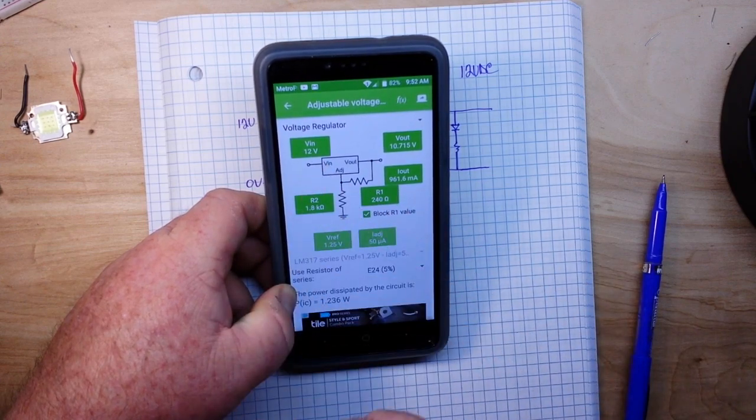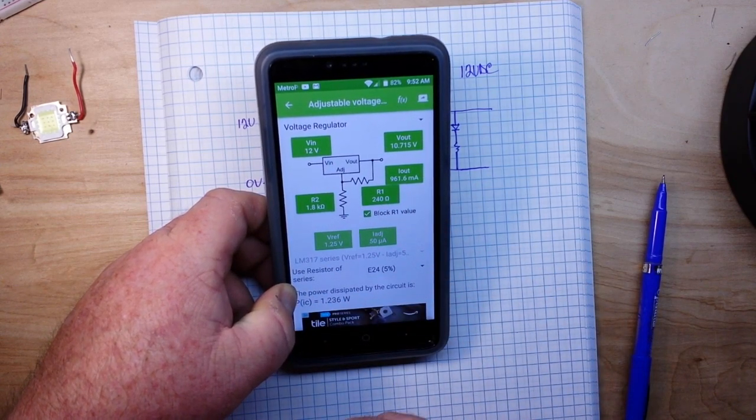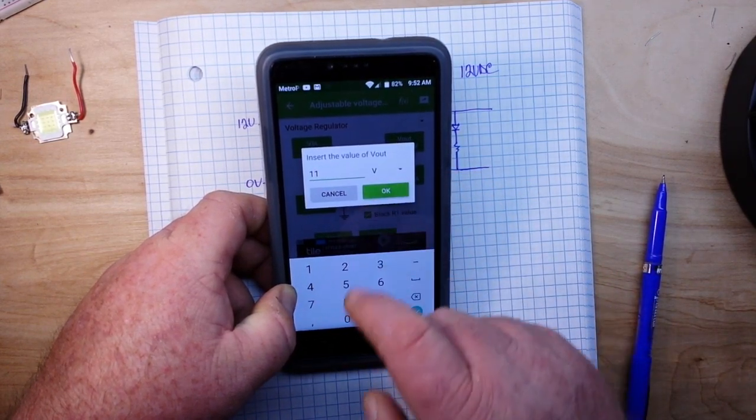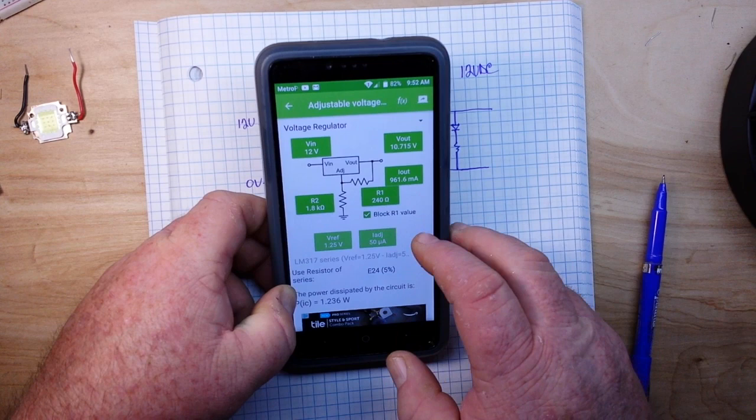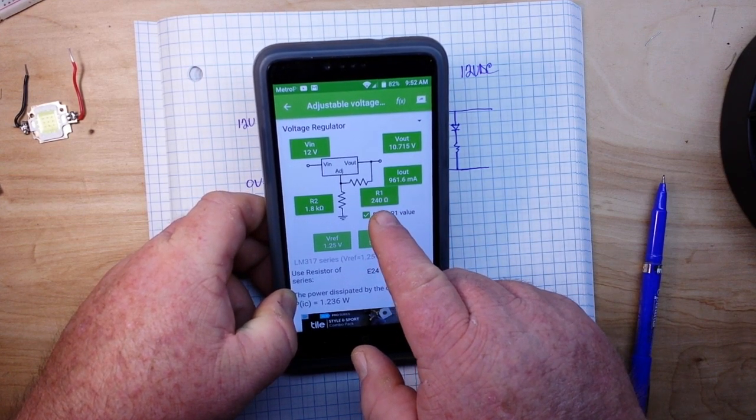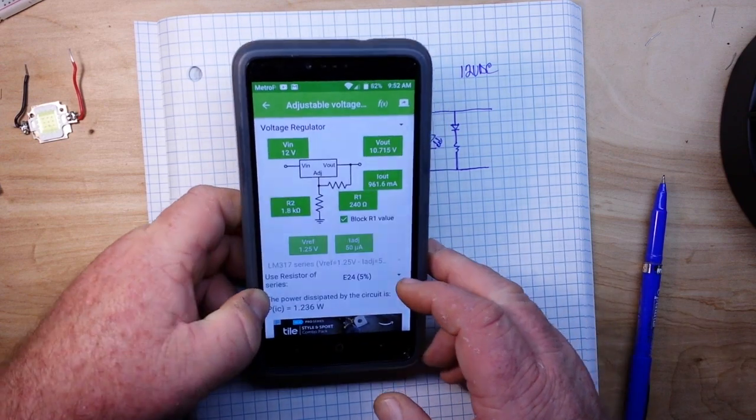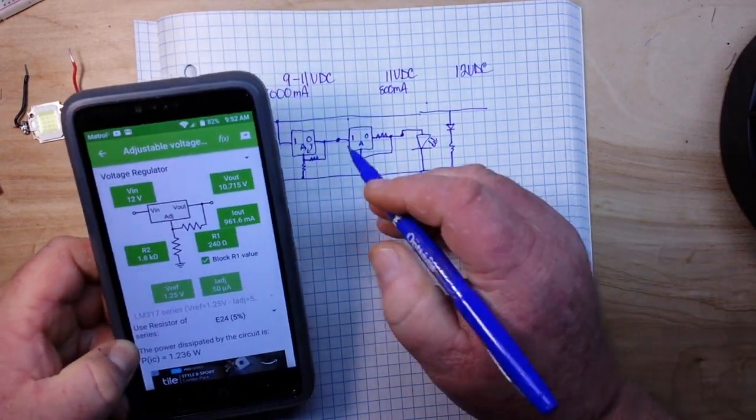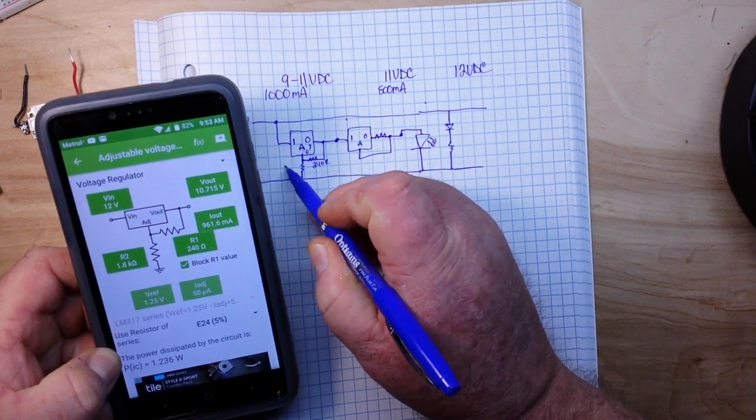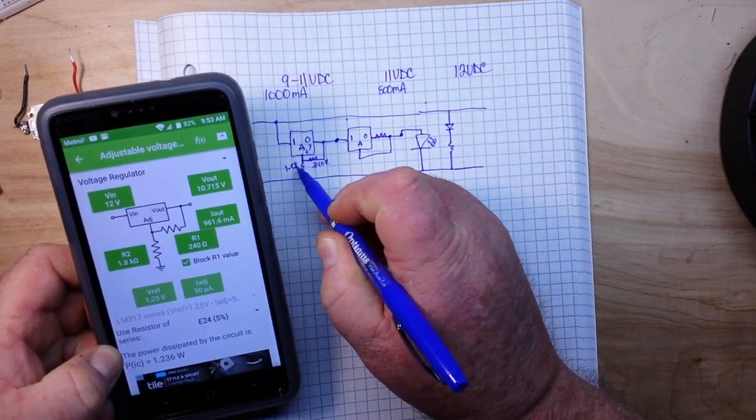And we're going to want our voltage regulator, we're feeding in 12 volts, we want out 11 volts. And it tells us our resistor values are 240 ohms and 1.8k, so we can mark them here. 240 ohms, 1.8k.